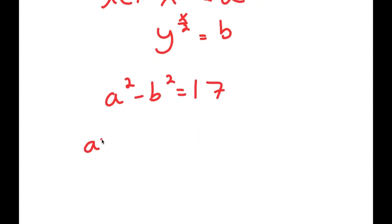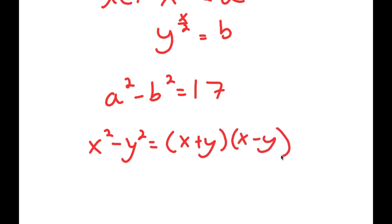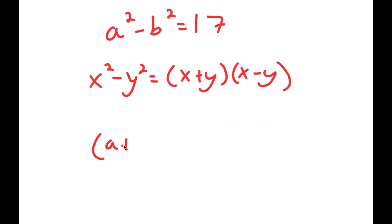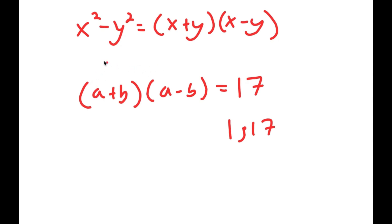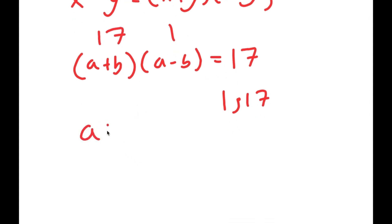Now if I have something in the form x squared minus y squared, this is equal to x plus y times x minus y. So a squared minus b squared equals a plus b times a minus b equals 17. The only factors of 17 are 1 and 17, meaning one of these two has to be 17 and the other has to be 1. Since a plus b is greater than a minus b, a plus b equals 17 and a minus b equals 1.